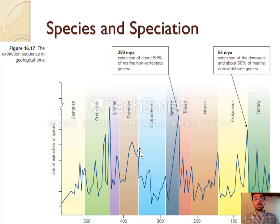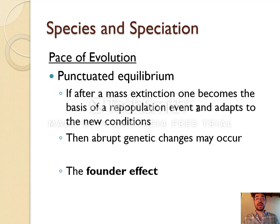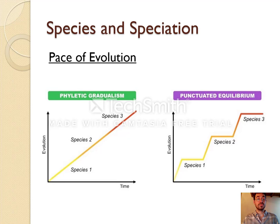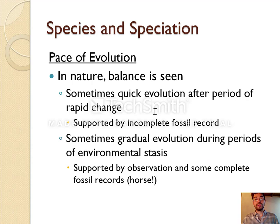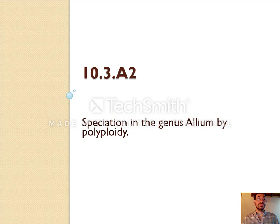In the history of the world, probably both are true. We see mass extinction events millions of years ago — for example, when an asteroid came and killed all the dinosaurs, the environment changed very quickly and evolution happened very quickly after that. Punctuated equilibrium suggests that after a mass extinction event, those that survive would evolve much more quickly, whereas gradualism suggests that evolution happens always and slowly. In nature, usually both happen — sometimes it's quick evolution after a period of change, and sometimes it's slow.